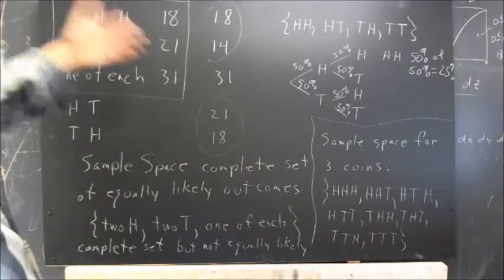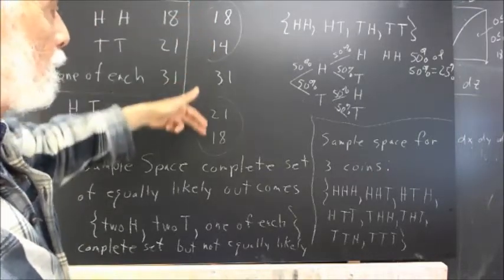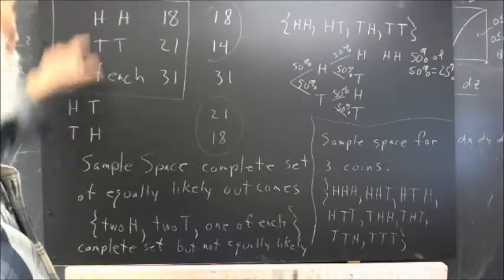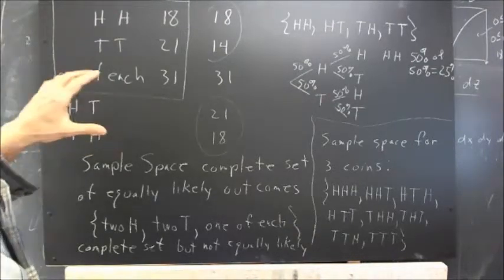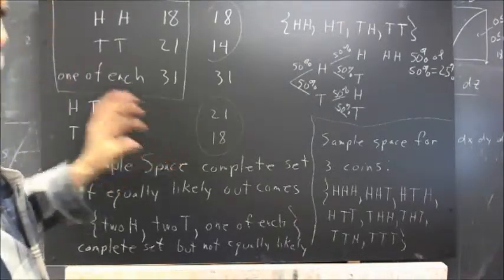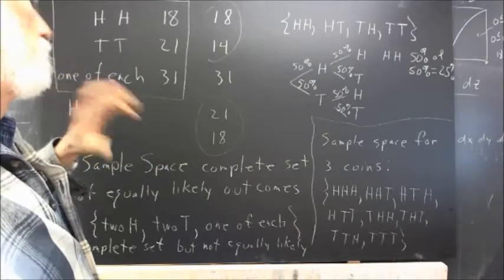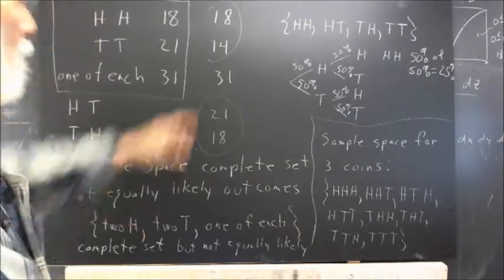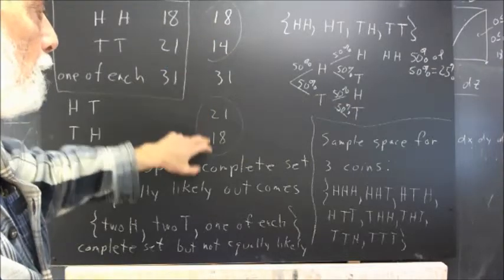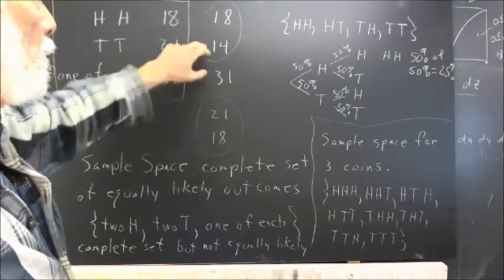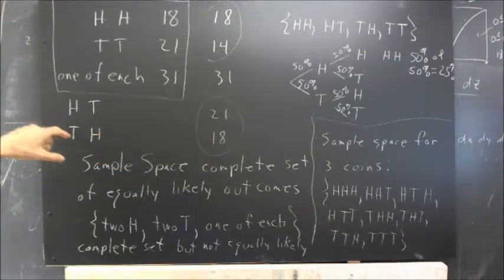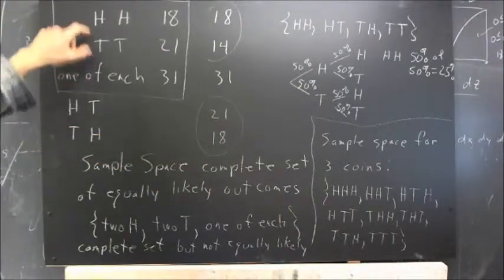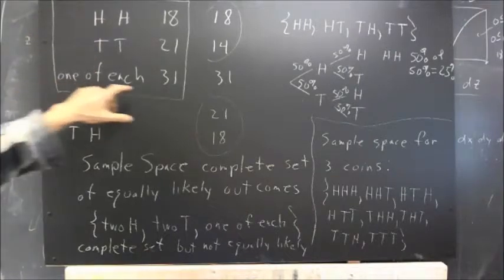But if we got relatively equal numbers for these four occurrences with 12 people doing a hundred repetitions each time, if we got pretty equal numbers here, here, here, and here, then we would conclude that it's pretty likely that each of these four occurrences is equally likely, whereas the one of each would not be.